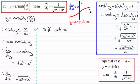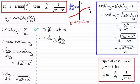Differentiating sinh y with respect to x means differentiating with respect to y first, which gives cosh y, and then multiplying by dy/dx — that's the implicit differentiation step. Differentiating x over a with respect to x just gives 1 over a. So we've got cosh y times dy/dx equals 1 over a.